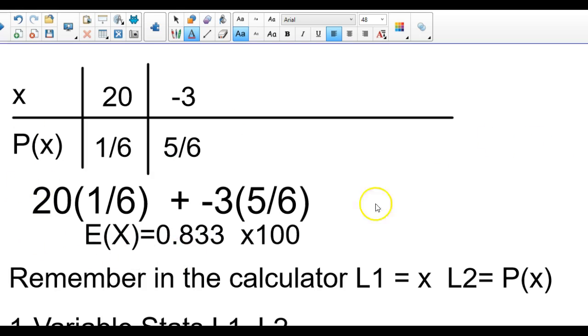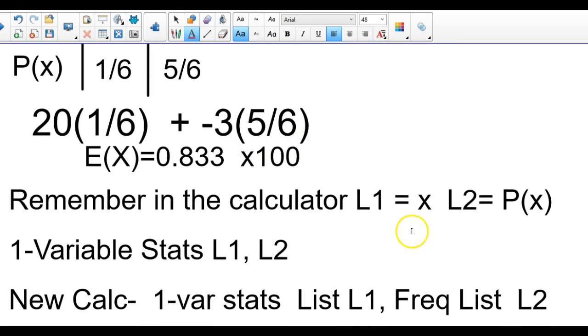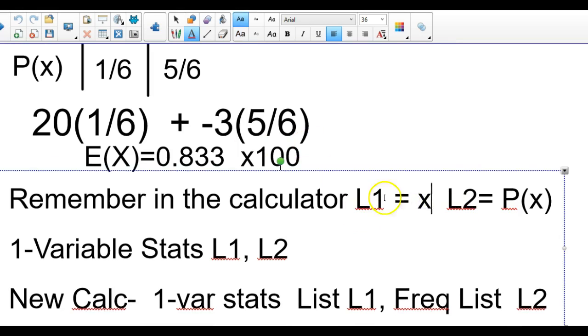Or in the calculator, remember you can put L1 as your observations right here. L2 is your probability of your observation. The old calculator would do a 1-var stats, L1 comma L2, and hit enter. The new calculator would do 1-var stats, and in your list it would be L1, and then in your frequency list would be L2.